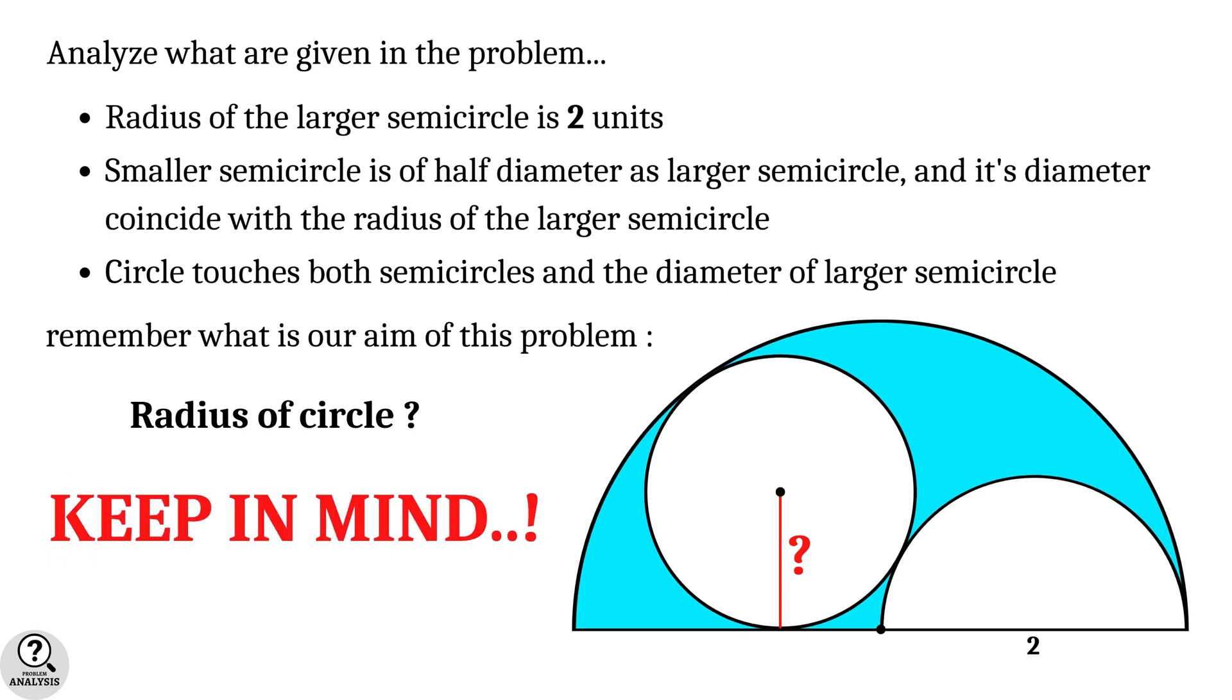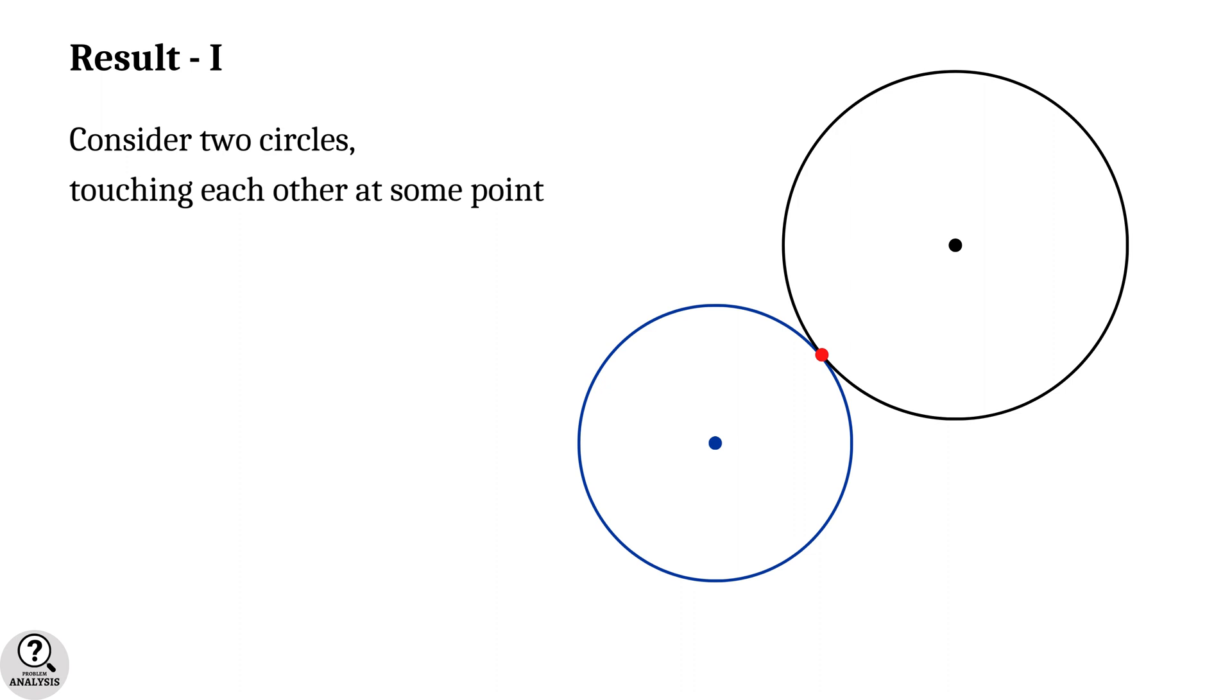Before going to the explanation, we need to note two important results about tangent lines and tangent circles. Result 1: Consider two circles touching at some point externally. Then the fact is, centers of the circles and their touching point are collinear.